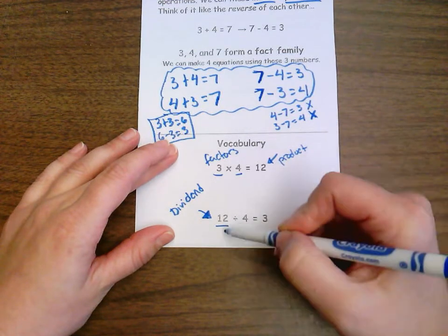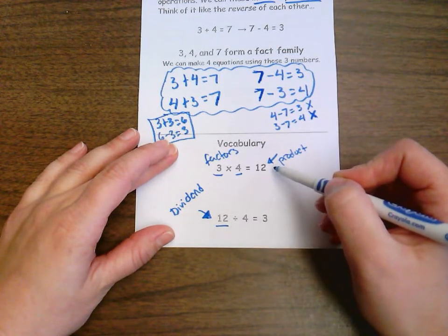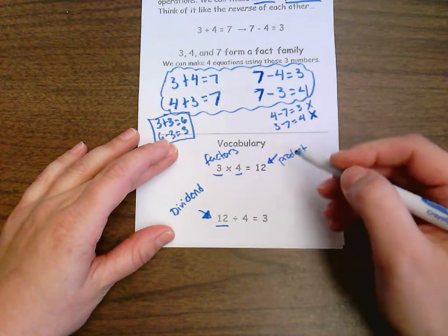It is our total that we're starting with in a division problem. So in a multiplication problem, that's called the product. In division, it now becomes the dividend.